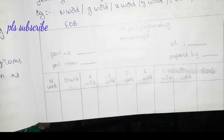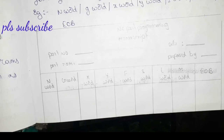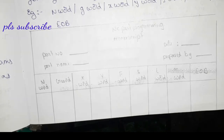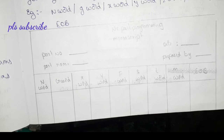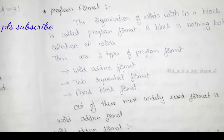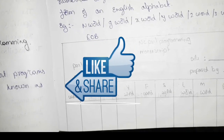Let's look at the NC part programming manuscript diagram, which includes Part Number, Part Name, Date, and Prepared By fields. The columns are N-word, G-word, X, Y, Z, F, S, T, M, E, O, B — this is the word address format. If you like and share this video please subscribe to my channel. Thank you for watching.